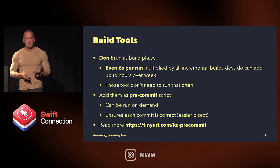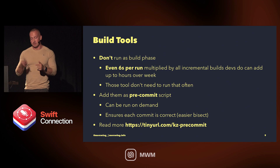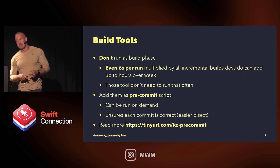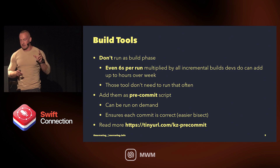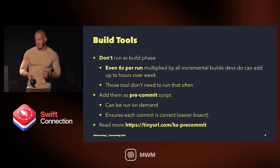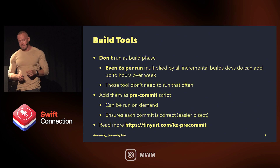How we integrate build tools matters a lot. Some people integrate Sorcery as a build phase — even though it's my tool, I would highly discourage that. Third-party tools don't need to run every time. With incremental builds, Apple optimizes the build but external tools won't know that cache and will rerun anyway. At the New York Times, running a couple of tools took six seconds per run including incrementals, and I ran two to four hundred times per day. Ninety percent of the time I didn't need those tools, which added two hours wasted — nine hours per day for 30 engineers. My recommendation is to do it as a pre-commit script.